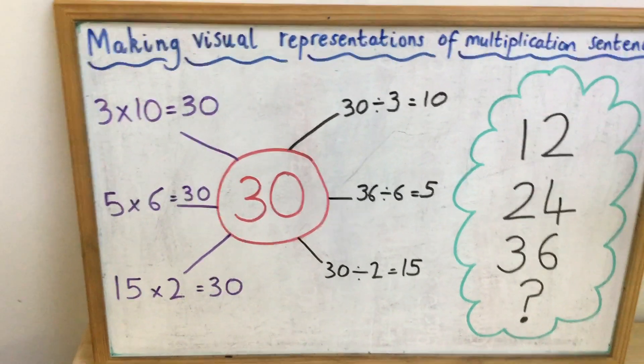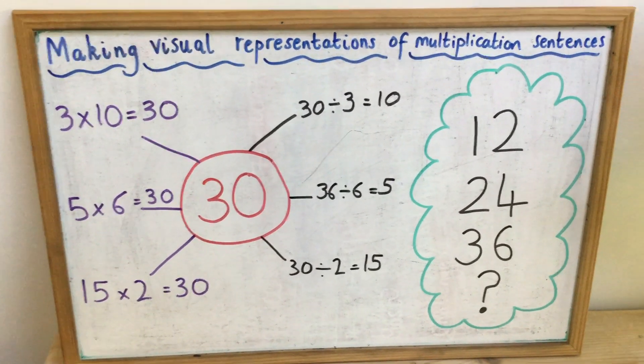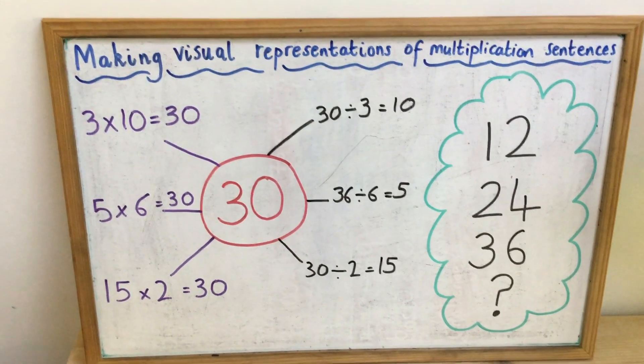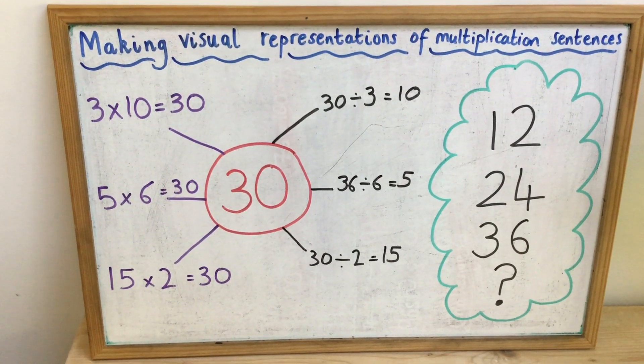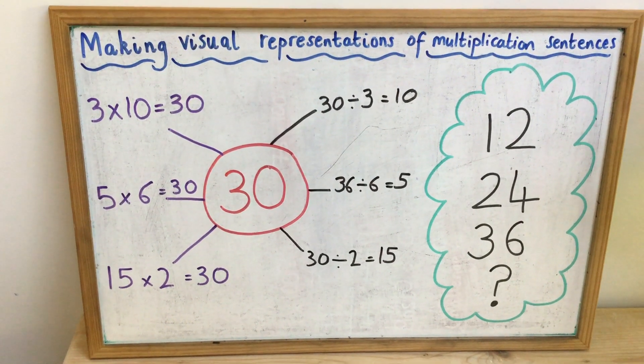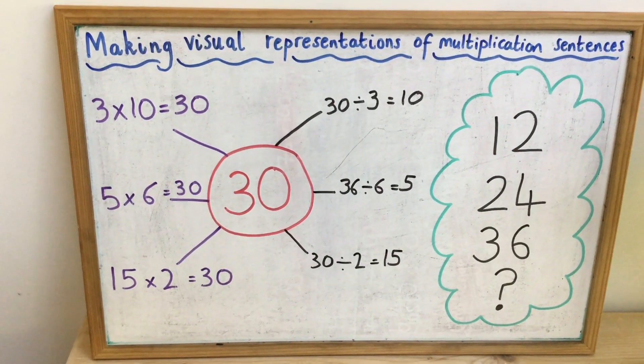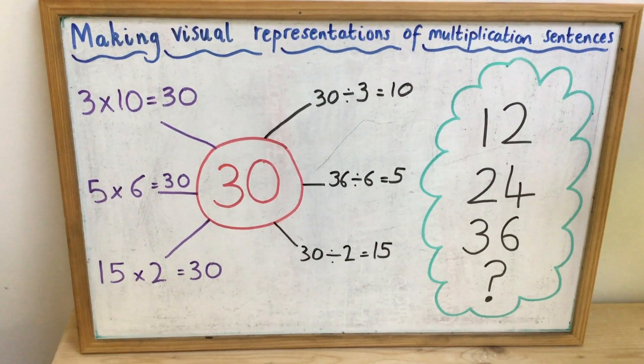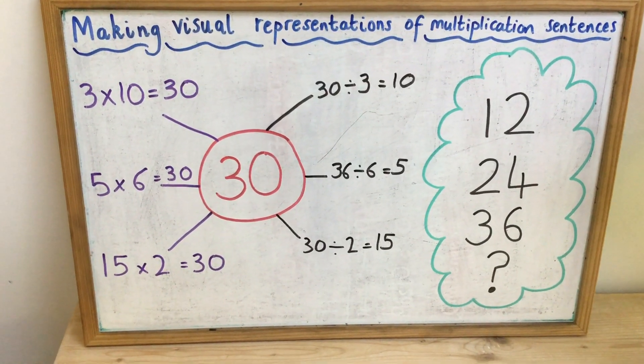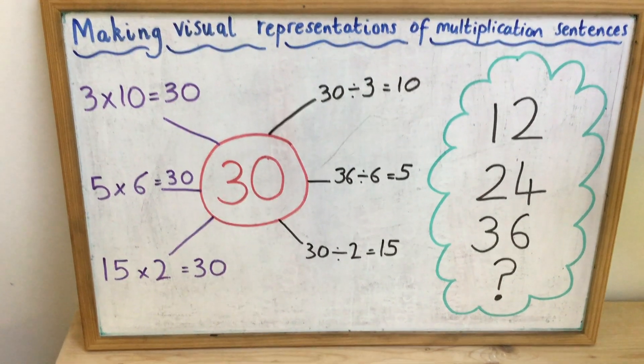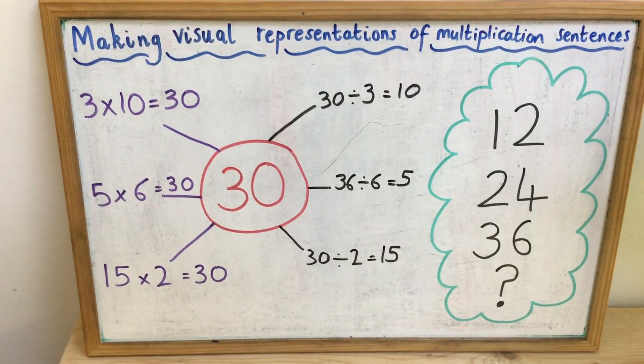So we know that 3 times 10 is 30. Therefore, 30 divided by 3 is 10. We know that 5 times 6 is 30. Therefore, 30 divided by 6 is 5. I seem to have put 36 on that board. It should say 30. Sorry about that.